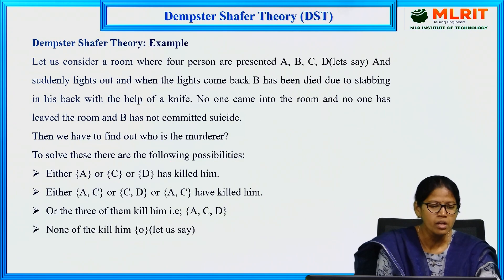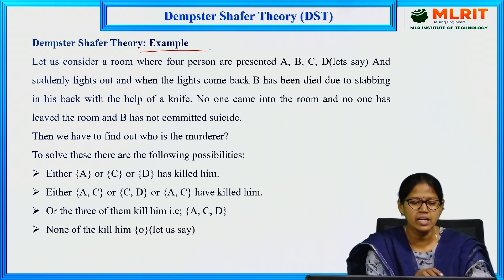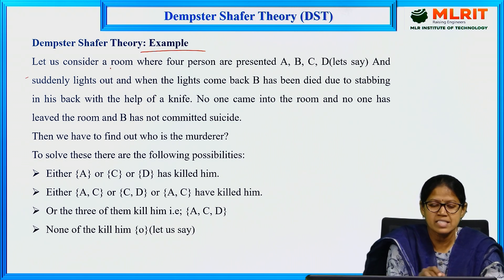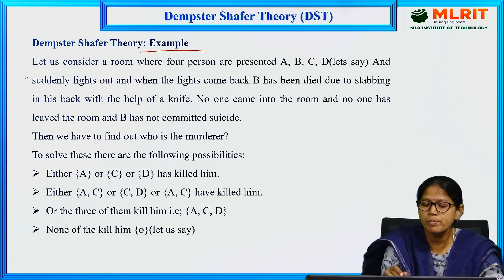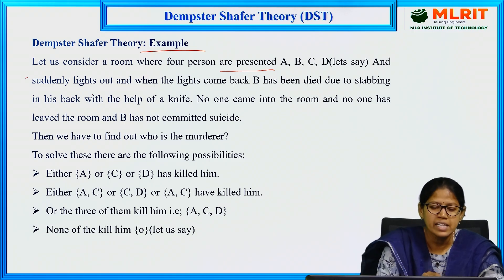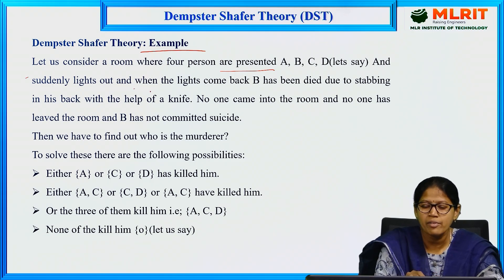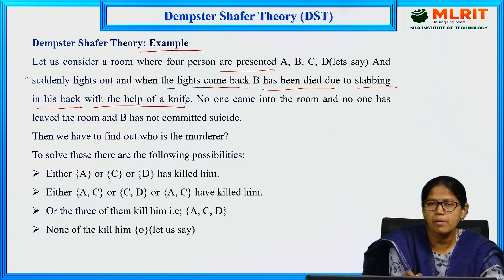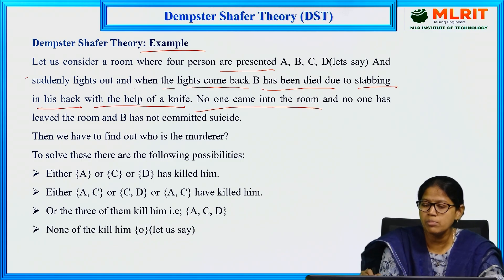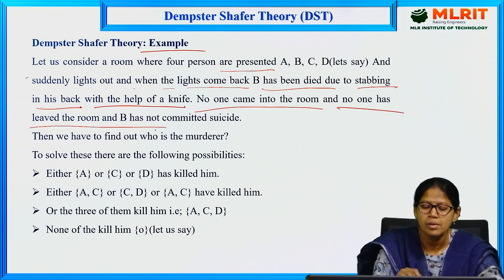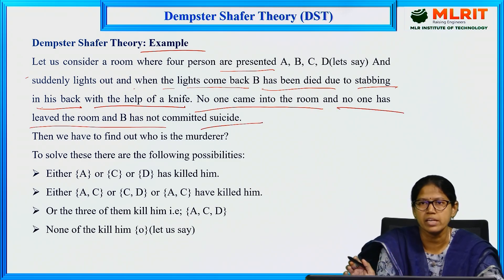Here is the example. Let us consider a room where 4 persons are present: A, B, C, D. Suddenly the lights go out, and when the lights come back, B has died due to stabbing in his back with a knife. No one came into the room and no one has left the room. B has not committed suicide. This is the scenario.